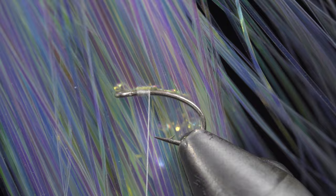We will then grab some flashaboo, here I'm using pearl. Secure a single strand to our hook shank and begin wrapping towards the bend of our hook.